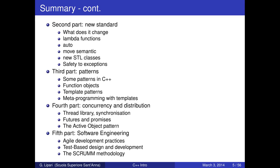We are also going to review very quickly some programming patterns in object-oriented programming applied to C++. The typical programming patterns are as described in the book by Gamma, Helm, Johnson, and others. We're also going to describe function objects, a little bit of functional programming in C++, and template metaprogramming and template patterns.